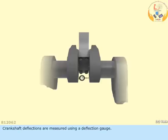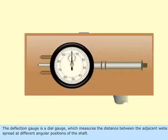Crankshaft deflections are measured using a deflection gauge. The deflection gauge is a dial gauge which measures the distance between the adjacent webs spread at different angular positions of the shaft.